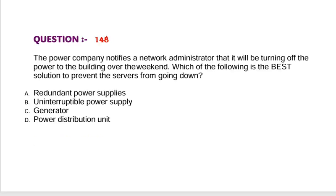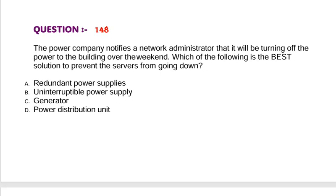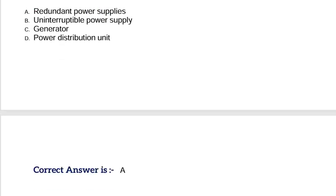Question: The power company notifies a network administrator that it will be turning off the power to the building over the weekend. Which of the following is the best solution to prevent the server from going down? Option A, redundant power supplies. Option B, uninterruptible power supply. Option C, generator. Option D, power distribution unit. Correct answer is Option A.